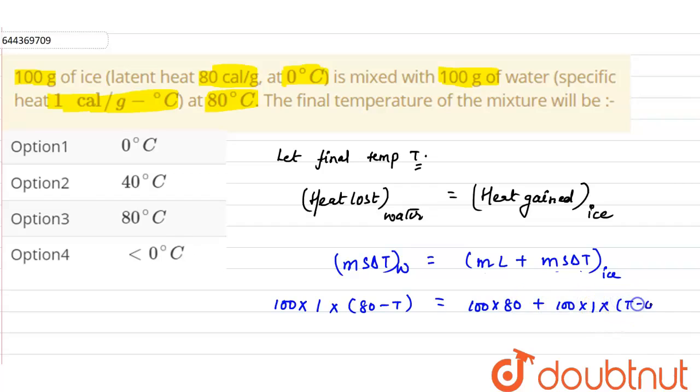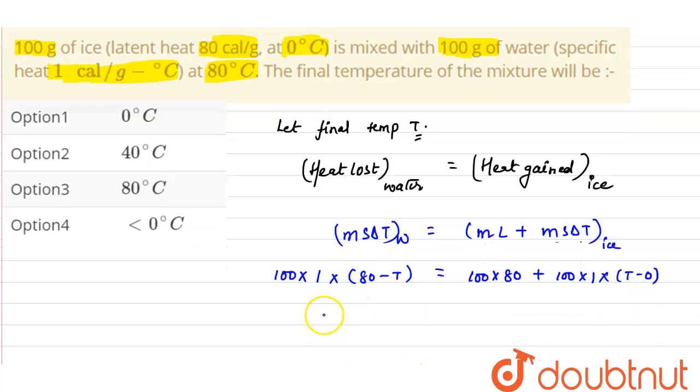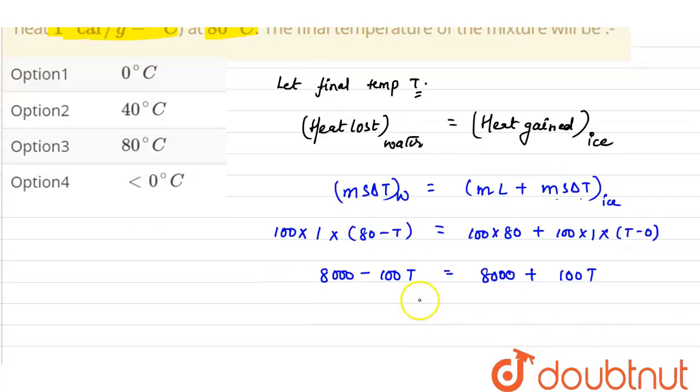So on solving this, we will get 8000 minus 100T equals 8000 plus 100T. From here we will get T as 0.